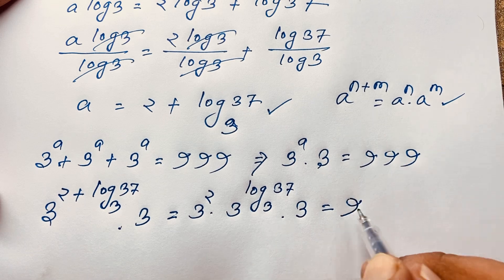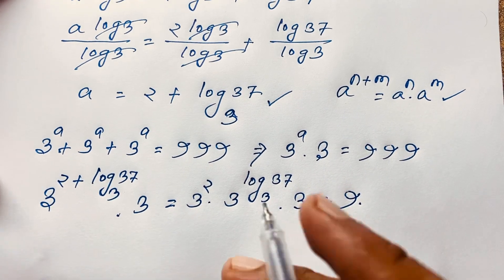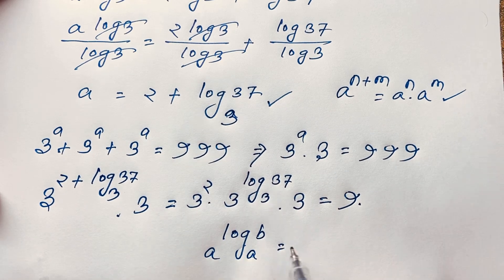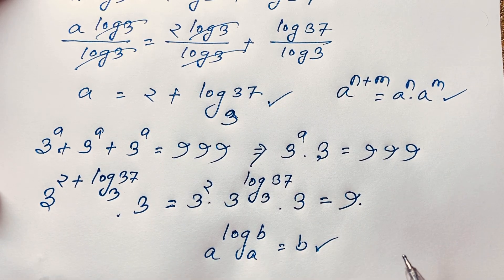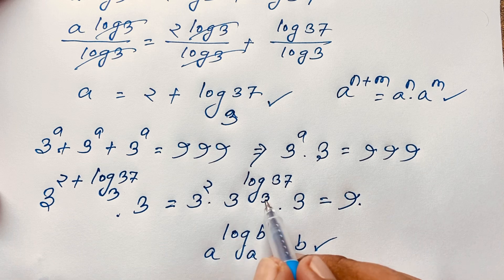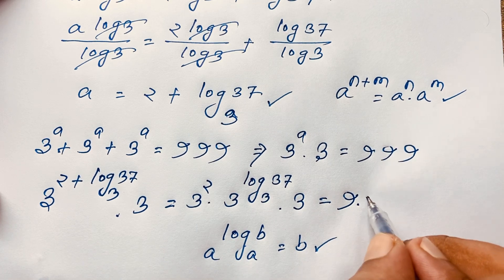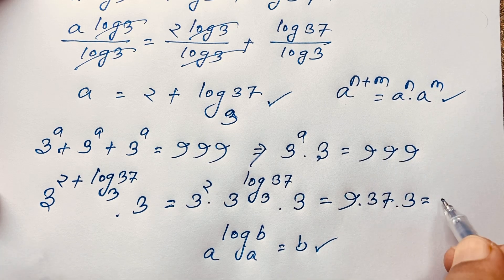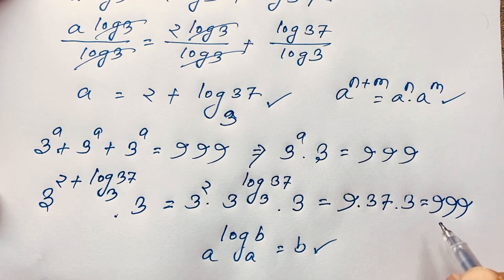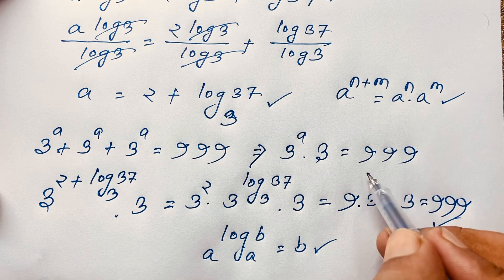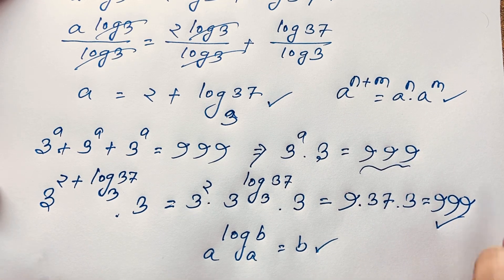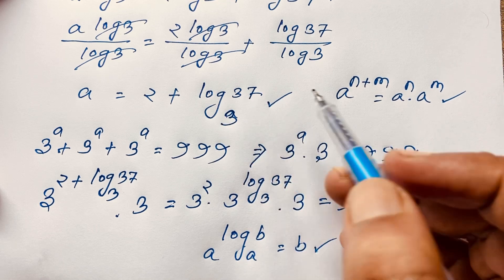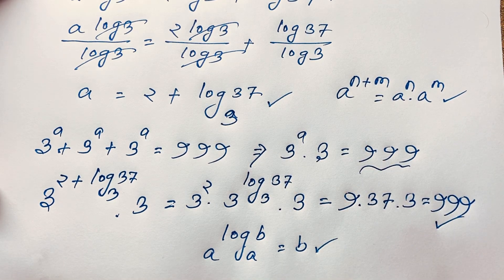You can see that 3 squared equals 9. Using the identity a to the power (log b base a) equals b, we get 3 to the power (log 37 base 3) equals 37. So it will be 9 times 37 times 3, which equals 999. The left-hand side and right-hand side are both equal, confirming that a is equal to 2 plus log 37 base 3. This is our final answer in this exponential math question.